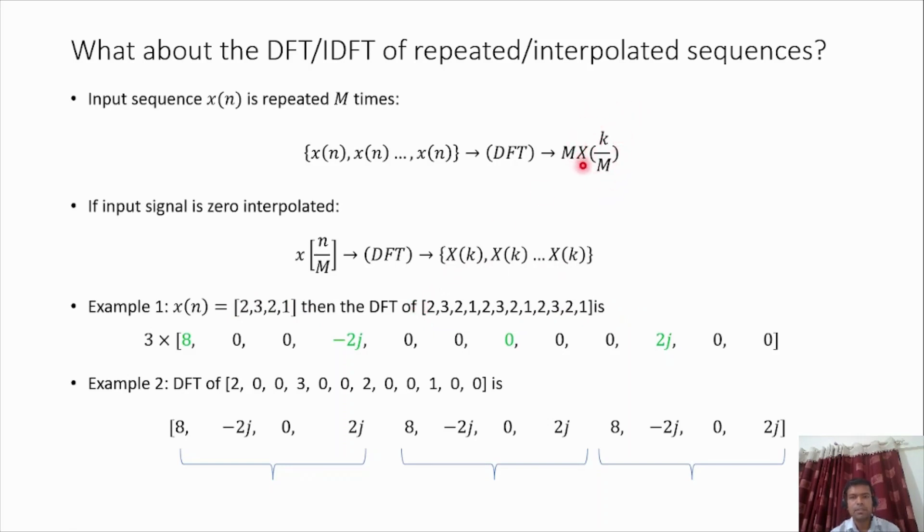Based on this, the spectrum is interpolated with zeros. The DFT of x[n] is [8, -2j, 0, 2j], shown in green color. That will be interpolated with zeros and then multiplied by M, which is 3. This is the output or DFT of this sequence.